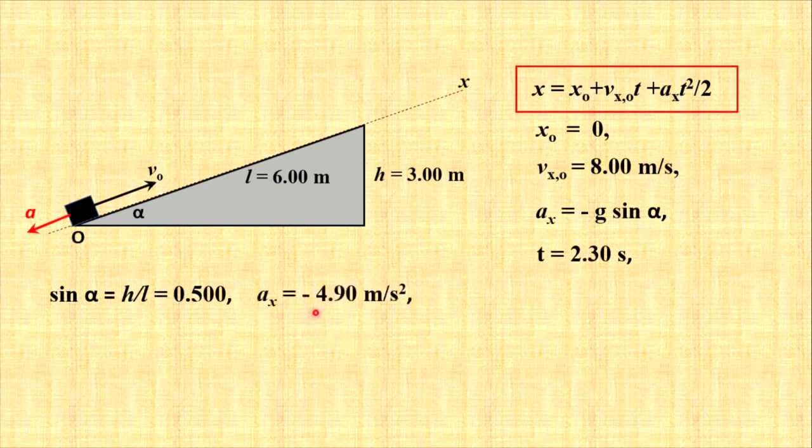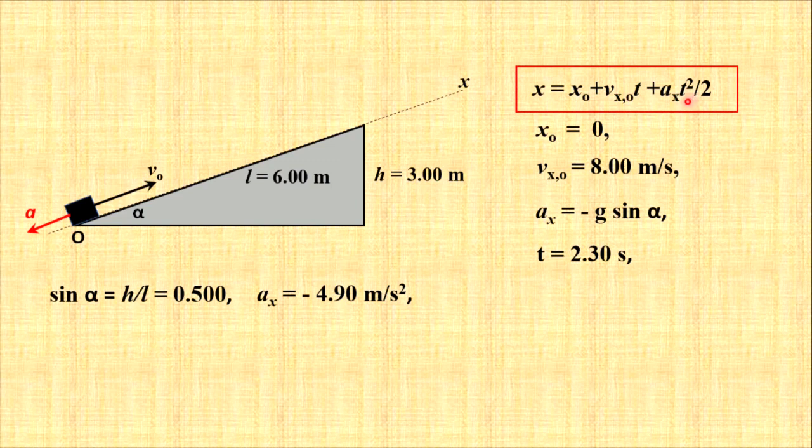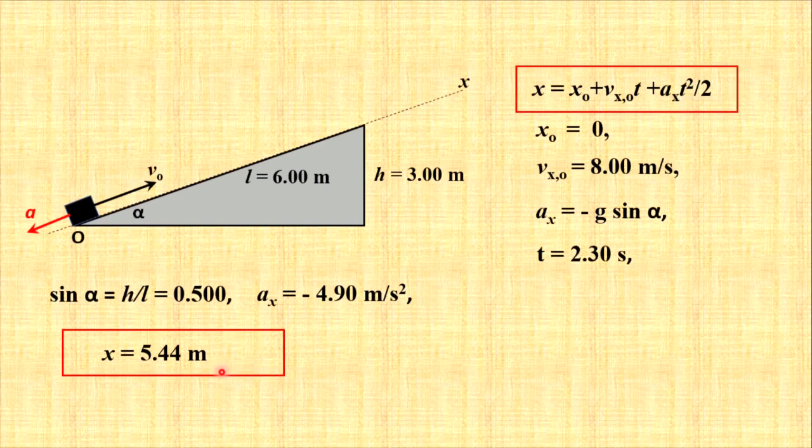In numbers, acceleration is negative 4.9 meters per second squared. Now we know everything in this equation and plug in and find the answer. The final answer obtained by student is that x at given time is equal 5.44 meters. So our object will be somewhere here.